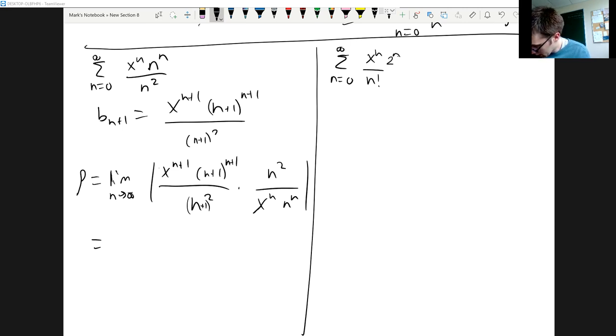The x^n's will cancel with n of the factors of x on top and we'll be left with just an absolute value of x, and I can just pull that out. And you'll notice that what's left is just things that have to do with n, and those are all positive so we don't need absolute values anymore. So now we have (n+1)^(n+1) which I'm going to write as (n+1)^n times (n+1) times n squared all over (n+1) squared times n^n.